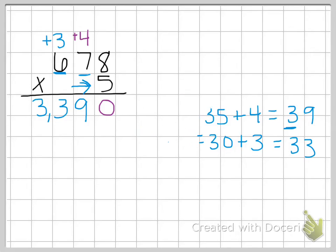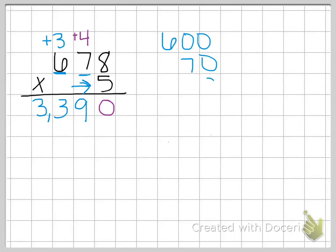I'm going to show you the way that we can do it using what's called partial products. And what that means is we're going to take our larger number and we're going to break it apart. So we're going to break 678 apart. So we have 600, we have 70, and we have 8. And I'm going to multiply each one of those parts by 5. So 600 times 5, 7 times 5, and 8 times 5.